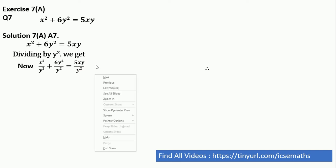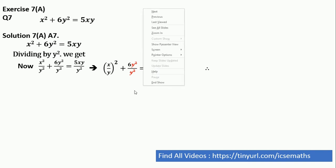After that, this will be getting x by y the whole square plus y and y cancelled, then that will become 6 is equal to 5xy by y square. So again, one y got cancelled. So this will become x by y the whole square plus 6 is equal to 5x by y.